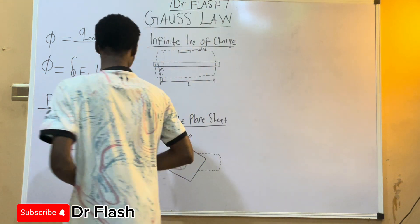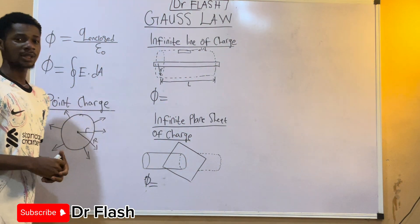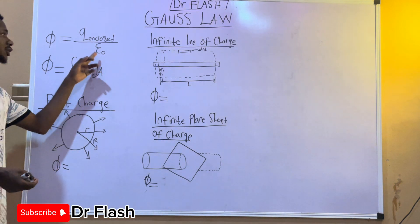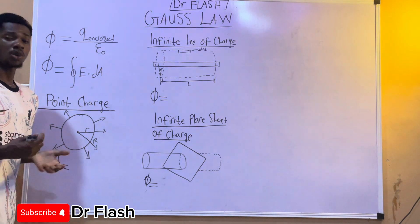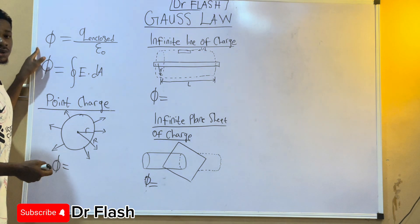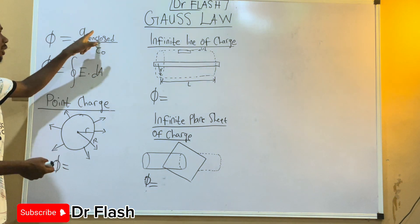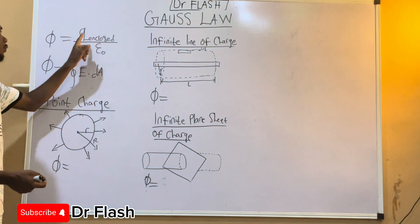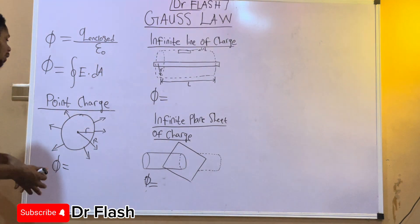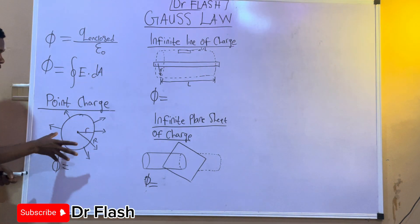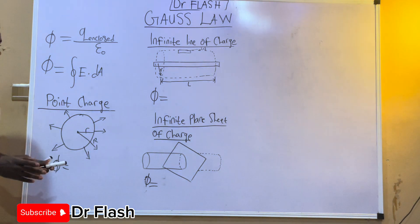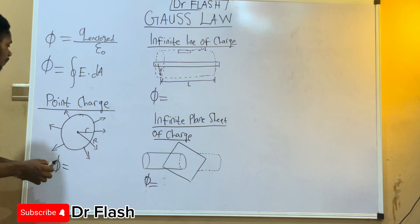Gauss's Law states that the net electric flux through a surface is equal to the enclosed charge divided by the permittivity of free space. Alternatively, the electric flux is directly proportional to the enclosed charge, with 1/ε₀ as the constant. We will use this formula to find the electric flux and electric field intensity for each of the charge configurations.